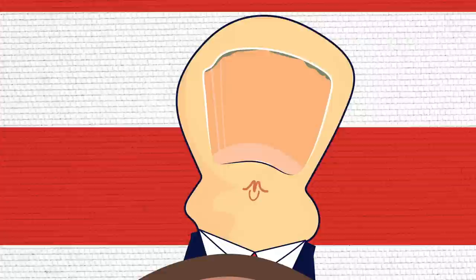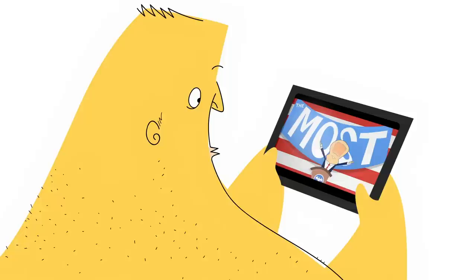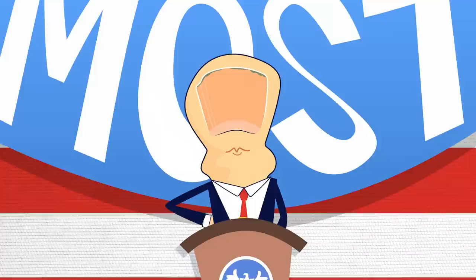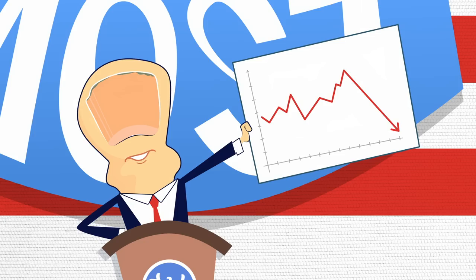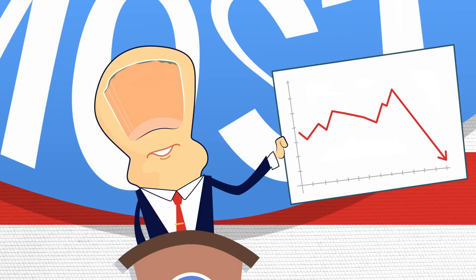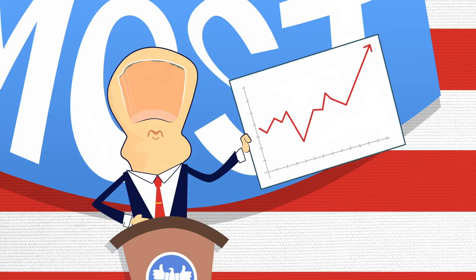A toothpaste brand claims their product will destroy more plaque than any product ever made. A politician tells you their plan will create the most jobs. We're so used to hearing these kinds of exaggerations in advertising and politics that we might not even bat an eye. But what about when the claim is accompanied by a graph? After all, a graph isn't an opinion — it represents cold, hard numbers, and who can argue with those? Yet, as it turns out, there are plenty of ways graphs can mislead and outright manipulate. Here are some things to look out for.